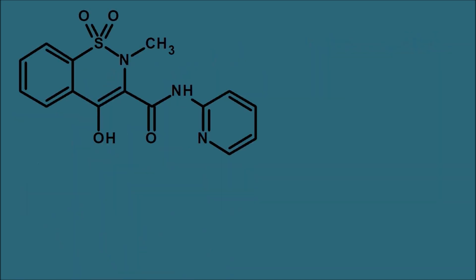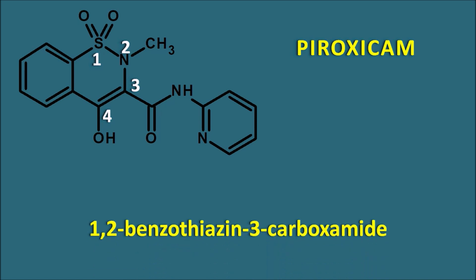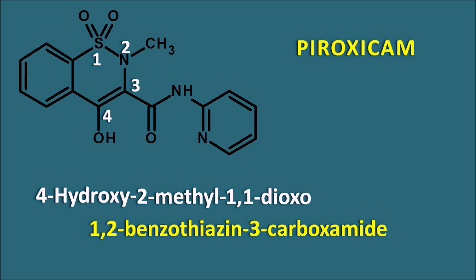The next class is the oxicam derivatives. One drug is piroxicam. In piroxicam we can observe a benzothiazine ring system numbered 1 through 4. This is a 1,2-benzothiazine with a carboxamide at the third position — so 1,2-benzothiazine-3-carboxamide. Further side chains include a 4-hydroxy group and a 2-methyl group. The first position sulfur has two oxo groups — 1,1-dioxo. So 4-hydroxy-2-methyl-1,1-dioxo-1,2-benzothiazine-3-carboxamide. The amide nitrogen carries a pyridine ring attached at its second position — N-(pyridin-2-yl). That is the full name of piroxicam.